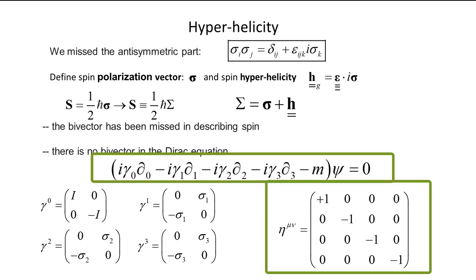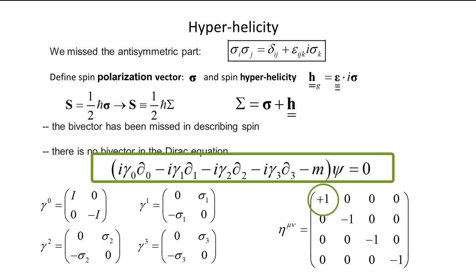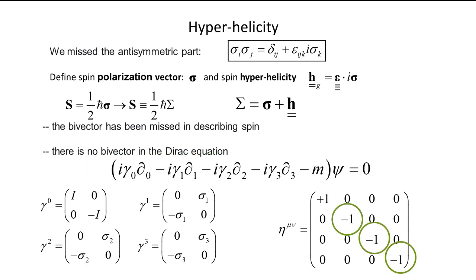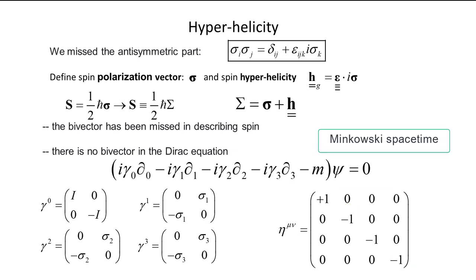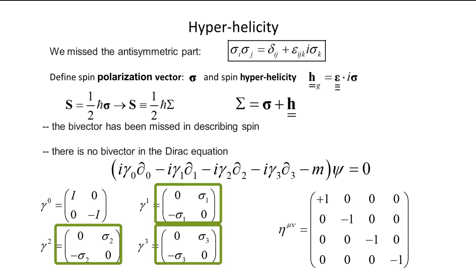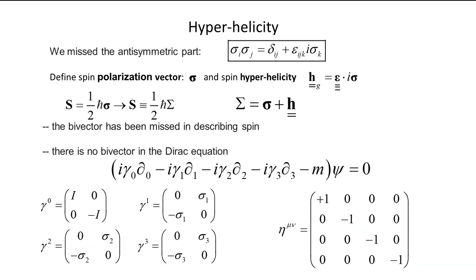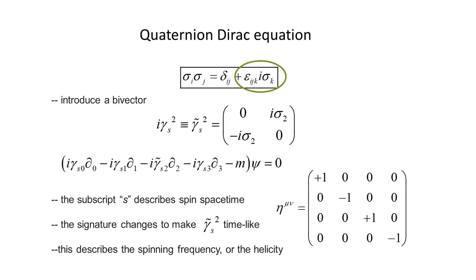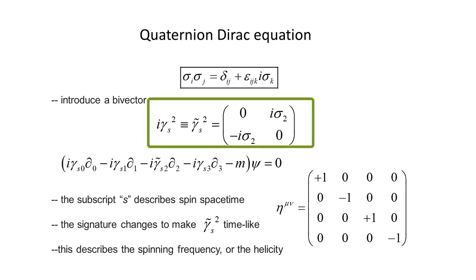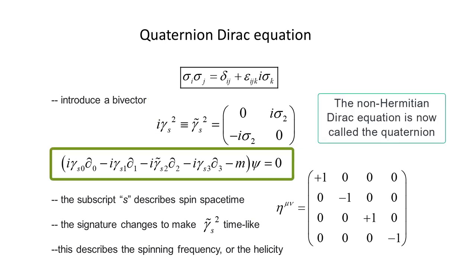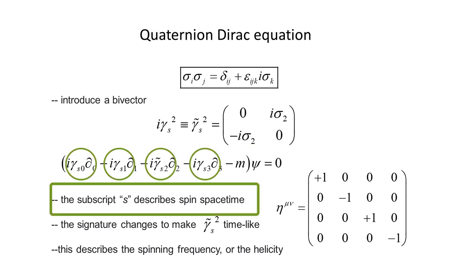This is the usual Dirac equation and the signature has 1 for time and minus 1 for the three spatial components. This is Minkowski spacetime. The spatial gamma matrices display two spins on the skewed diagonal. These are what Dirac took as the matter-antimatter pair. To include the bivector, I must multiply gamma 2 by the imaginary number and define gamma tilde, which becomes Hermitian. Therefore, the modified Dirac equation, called the quaternion equation, now becomes non-Hermitian. The subscript S describes spin spacetime. Since spin now has structure, it can have any orientation in Minkowski spacetime.